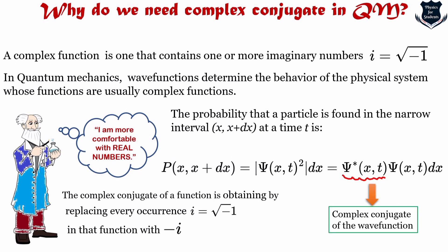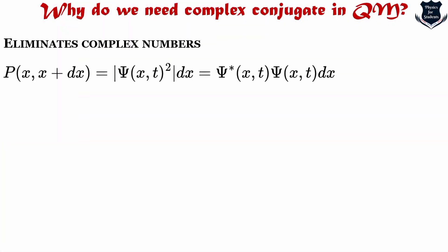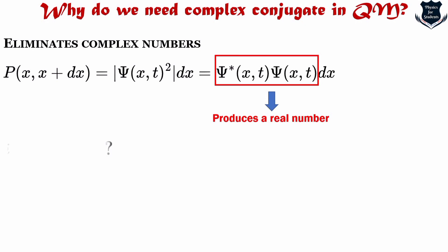The complex conjugate of a function is obtained by replacing every occurrence of i (= √(−1)) in that function with −i. In short, in order to make mathematics easier and to measure experimental results, we are much more comfortable with real numbers rather than imaginary numbers. So we use the complex conjugate in order to eliminate imaginary numbers so that things become easier. The product of a complex number and its complex conjugate produces a real number.